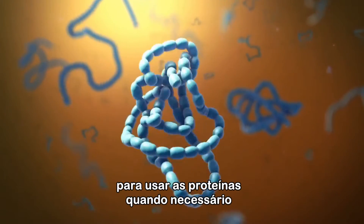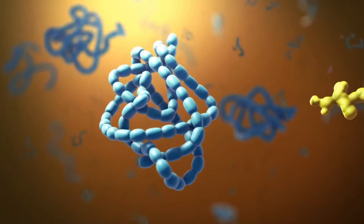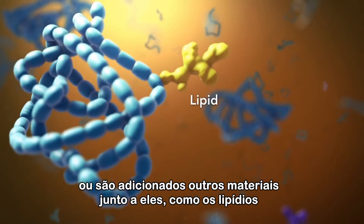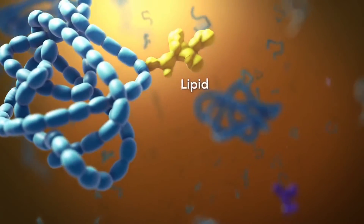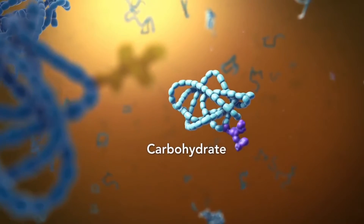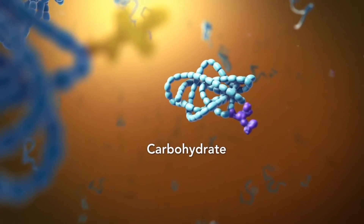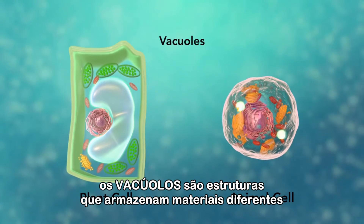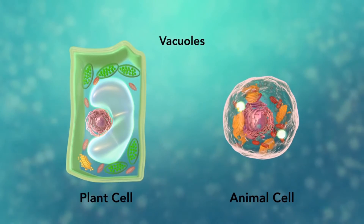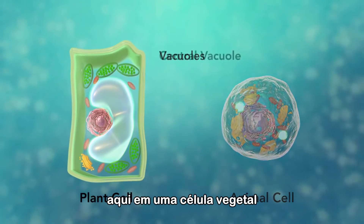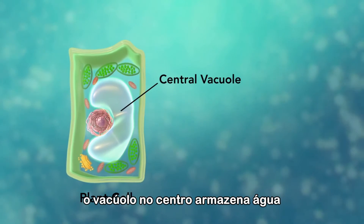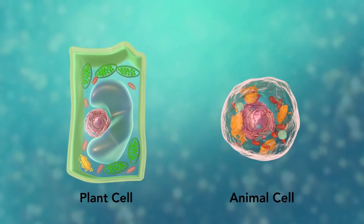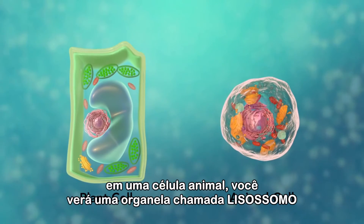As proteins move through the Golgi body, they're customized into forms that the cell can use. The Golgi body does this by folding the proteins into usable shapes or adding other materials onto them, such as lipids or carbohydrates. Vacuoles are sac-like structures that store different materials.